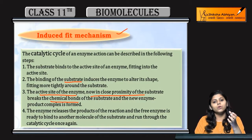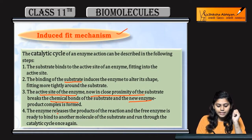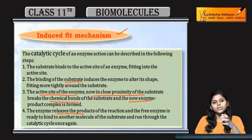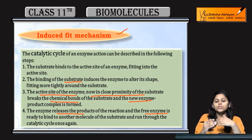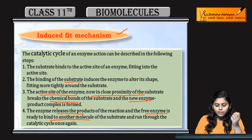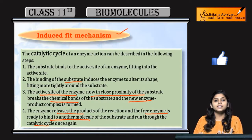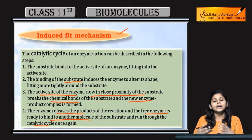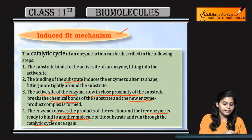Enzyme break karta hai chemical bonds of the substrate, and new enzyme product complex us mein form hota hai. Enzyme release karta hai product of the reaction, and the free enzyme is ready to again bind to another molecule of the substrate and run through the catalytic cycle once again. Substrate ki sath bind karke product bernata hai, aur product ko release karke enzyme dobarah dousari cycle mein continue karta hai.